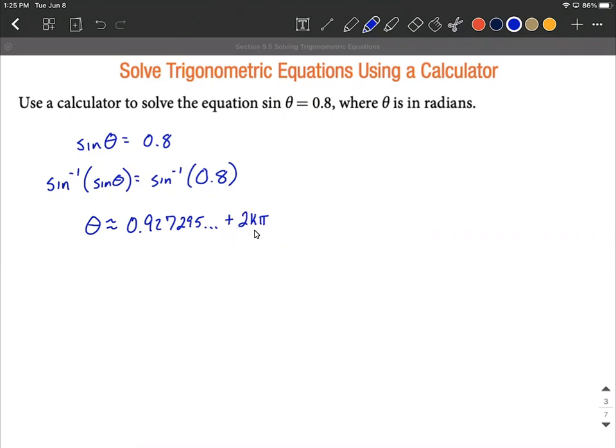If we continue going around additional times around the circle, where k is going to be an integer. So 0, 1, 2, 3, or negative values - negative 1, negative 2, negative 3 - can get plugged in here for this k.